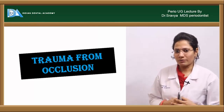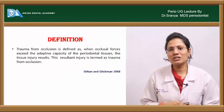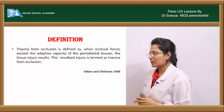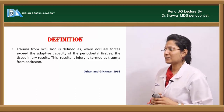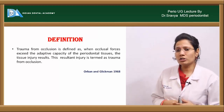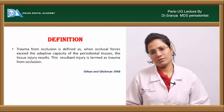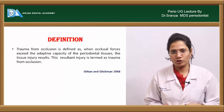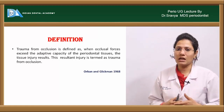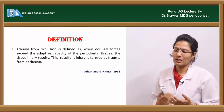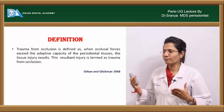The topic is trauma from occlusion. Trauma from occlusion is defined according to Aubin and Glickman as occlusal forces when they exceed the adaptive capacity of the tissues, a tissue injury that results. This resultant tissue injury is defined as trauma from occlusion.